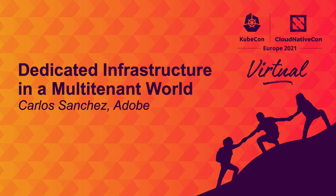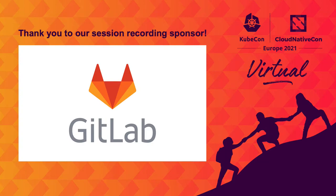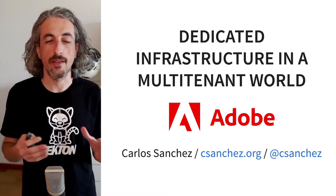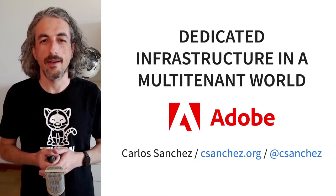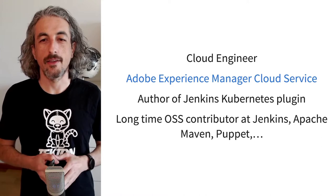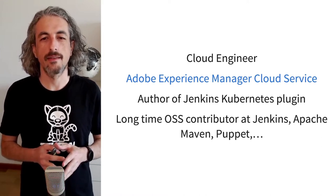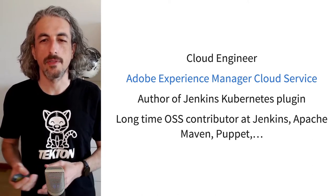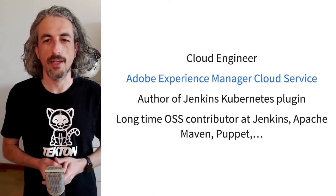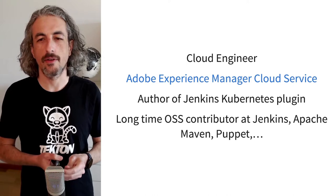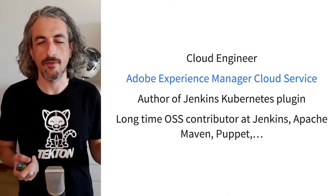Hello, my name is Carlos Sánchez and I'm here to talk to you about dedicated infrastructure in a multi-tenant world. I work at Adobe and I'm going to talk to you about some of the things we are building there in one of the services. I'm a cloud engineer at Adobe Experience Manager Cloud Service and I'm a long-time open source contributor. I started the Jenkins Kubernetes plugin that allows you to run Jenkins agents on Kubernetes, and I've been a long-time contributor at other projects like Apache Maven, Puppet, and a few other things.